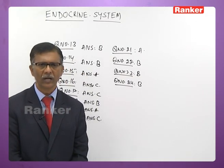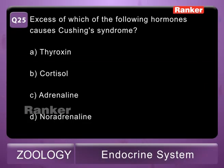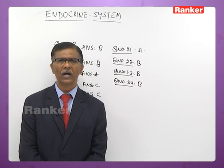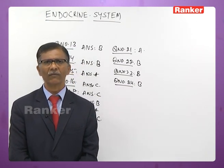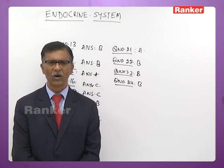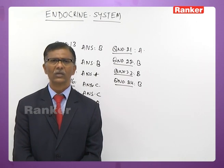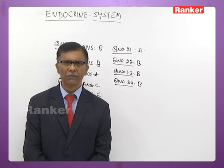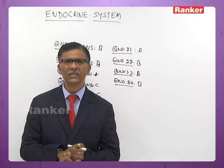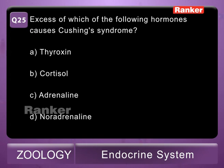Twenty-fifth question: excess of which hormone causes Cushing's syndrome? A - thyroxine, B - cortisol, C - adrenaline, D - noradrenaline. Cushing's syndrome is caused by excess secretion of cortical hormones of the adrenal cortex. Cortisol is one of the cortical hormones secreted by the adrenal cortex; its hypersecretion results in Cushing's syndrome. The correct answer is B — cortisol.